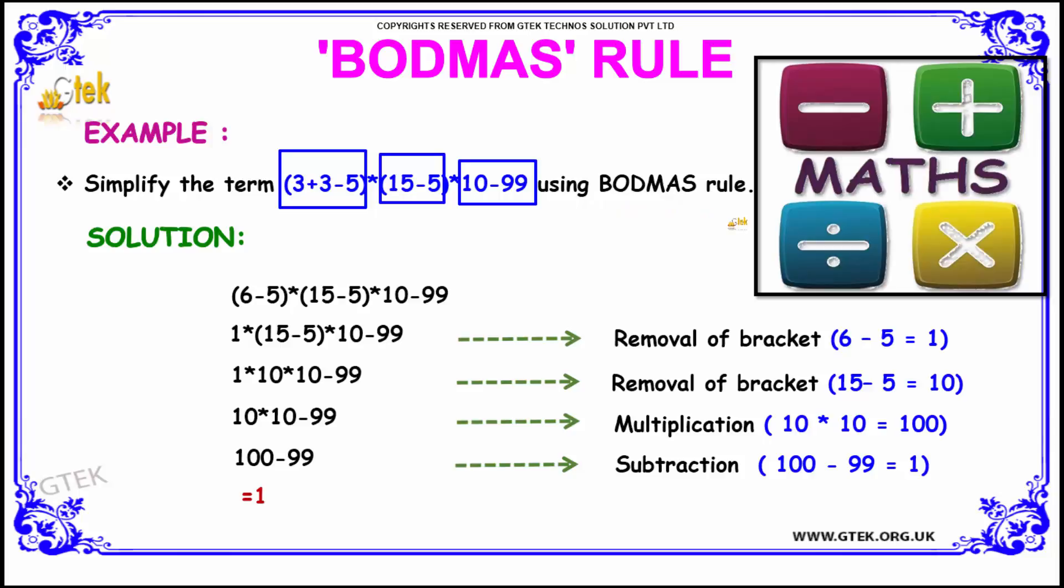So the solution for this problem is, from the given expression, the (3+3-5) which is equal to (6-5). So the actual procedure is, first of all, we need to remove the brackets, that is 6-5 = 1 × (15-5) = 10 which comes here and × (10-99).